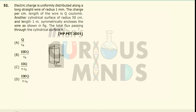Electric charge is uniformly distributed along a long straight wire of radius 1 mm. The charge per centimeter per unit length of the wire is equal to q coulombs. Another cylindrical surface of radius 50 cm and length 1 meter symmetrically encloses the wire as shown in the figure. The total flux passing through the cylindrical surface will be equal to?